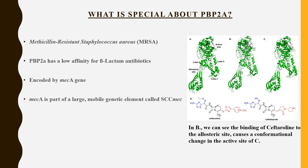Now we'll talk about what is special about PBP2A and its role in MRSA. PBP2A is important because it has a reduced or low affinity for beta-lactam antibiotics, which are used to inhibit the cross-linking of peptidoglycan layers in the cell wall. For PBP2A, when these beta-lactam antibiotics are introduced, cross-linking is still able to continue — making it essentially resistant to these antibiotics.